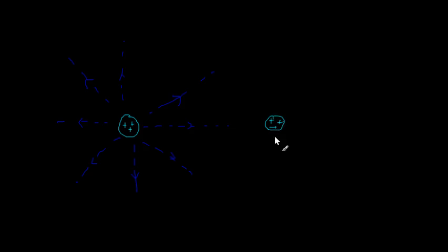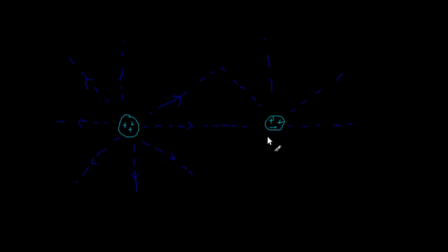What if I also have another positively charged glass ball nearby? Clearly this glass ball would also produce its own electric field around here, and I can imagine that it has its own field lines radiating outwards, just like the first one.